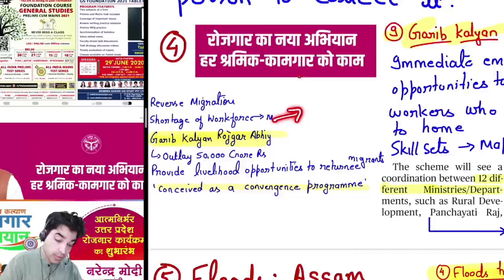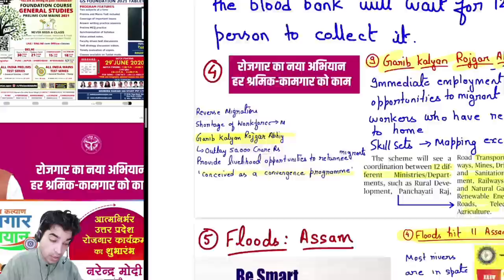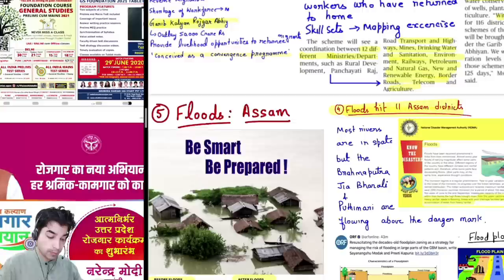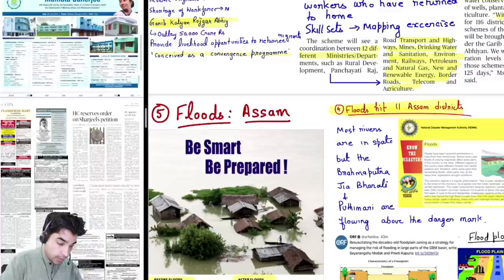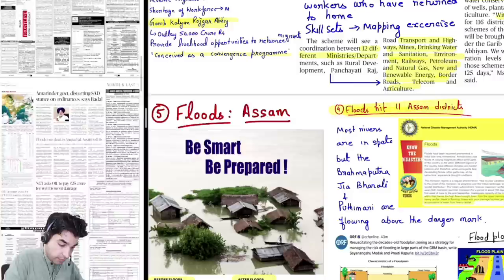The outlay is over ₹50,000 crore. Because of COVID-19, employment crisis has become a major problem. There is also a shortage of workforce in cities and urban centers because the entire labor force has reverse-migrated. In this backdrop, the Garib Kalyan Rojgaar Abhiyan is a very important scheme. This is not something new — it is just a convergence program of existing ministry schemes.